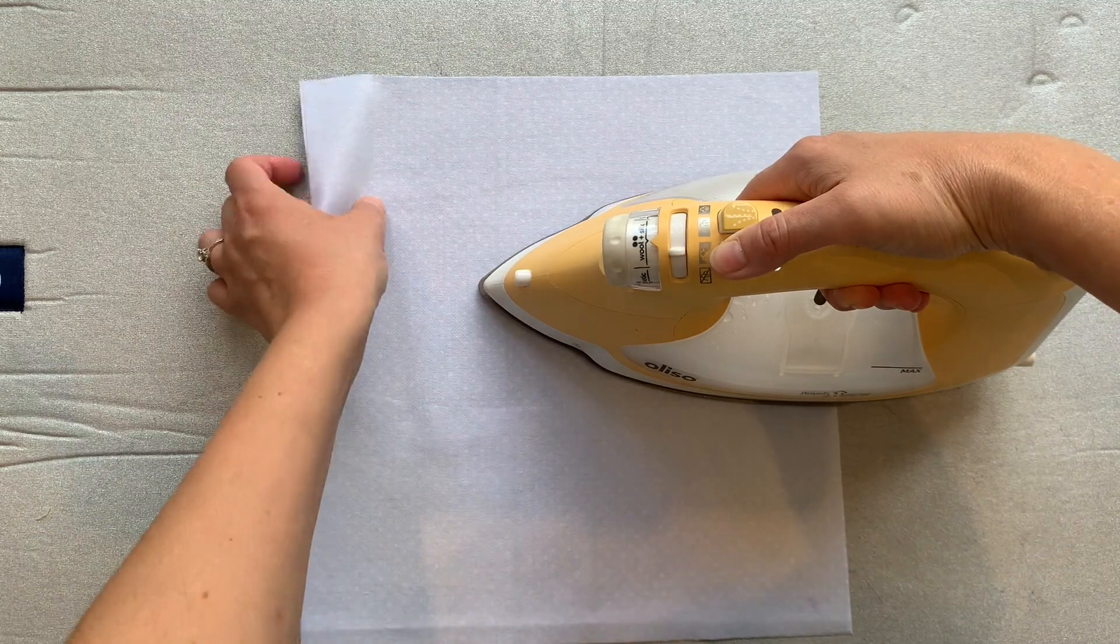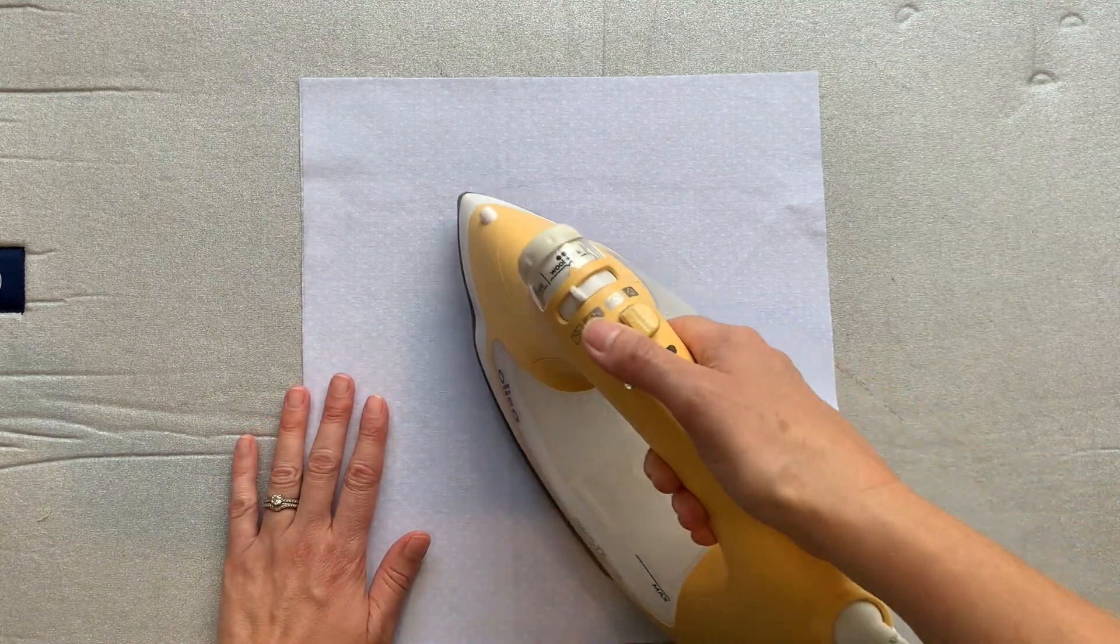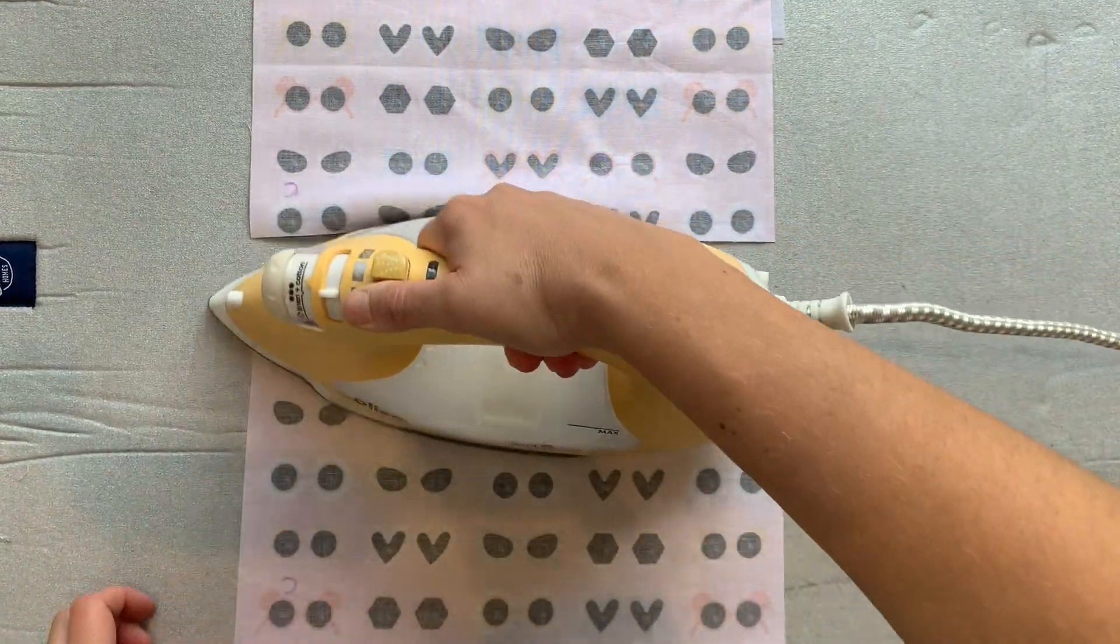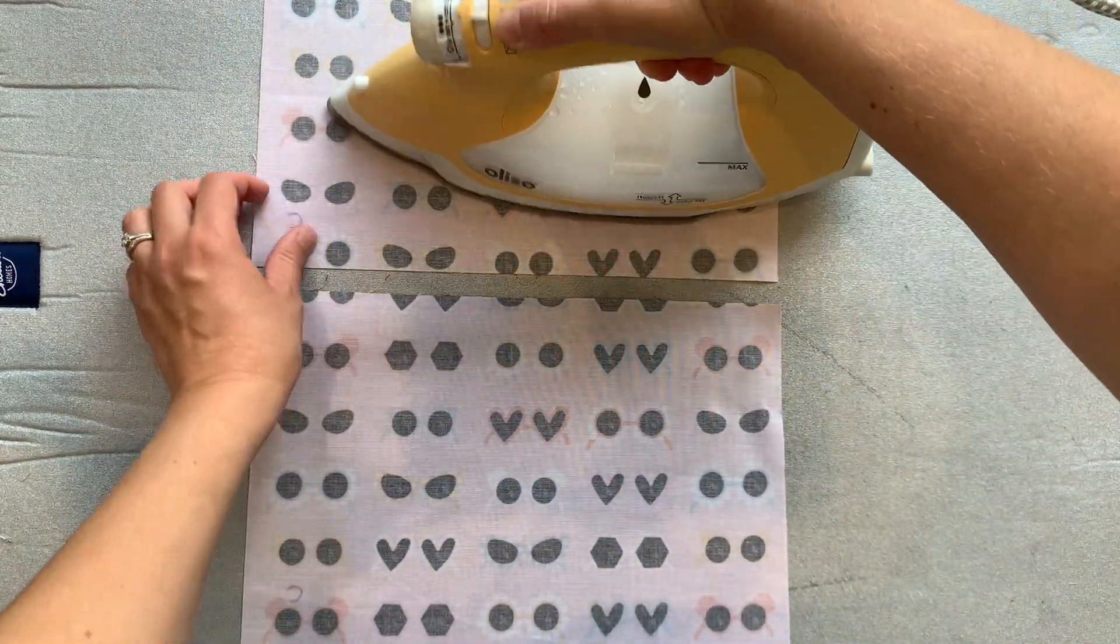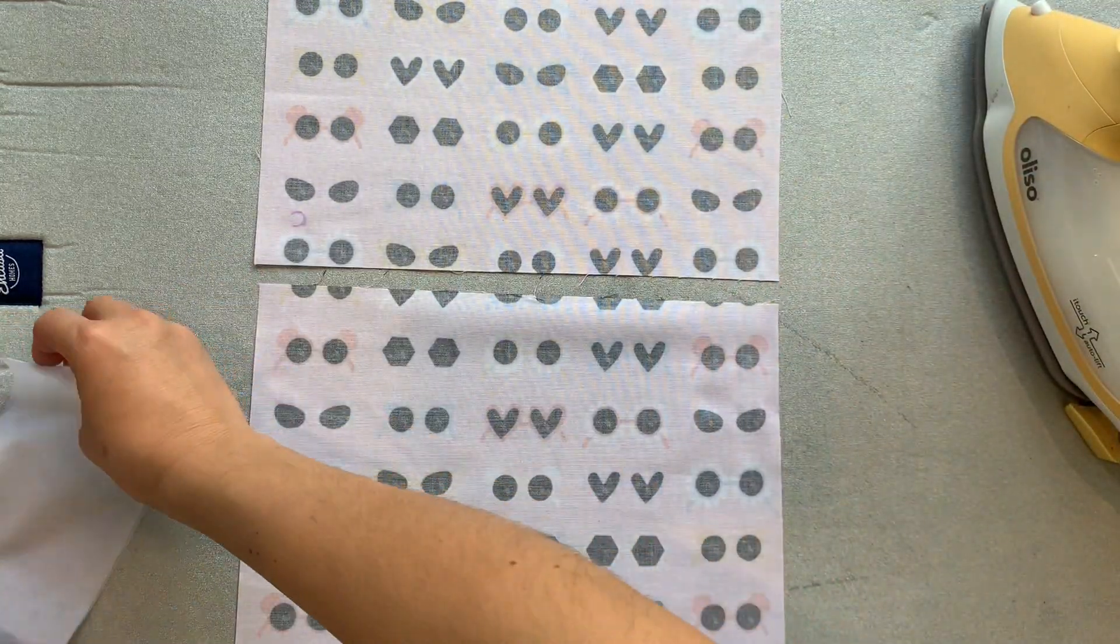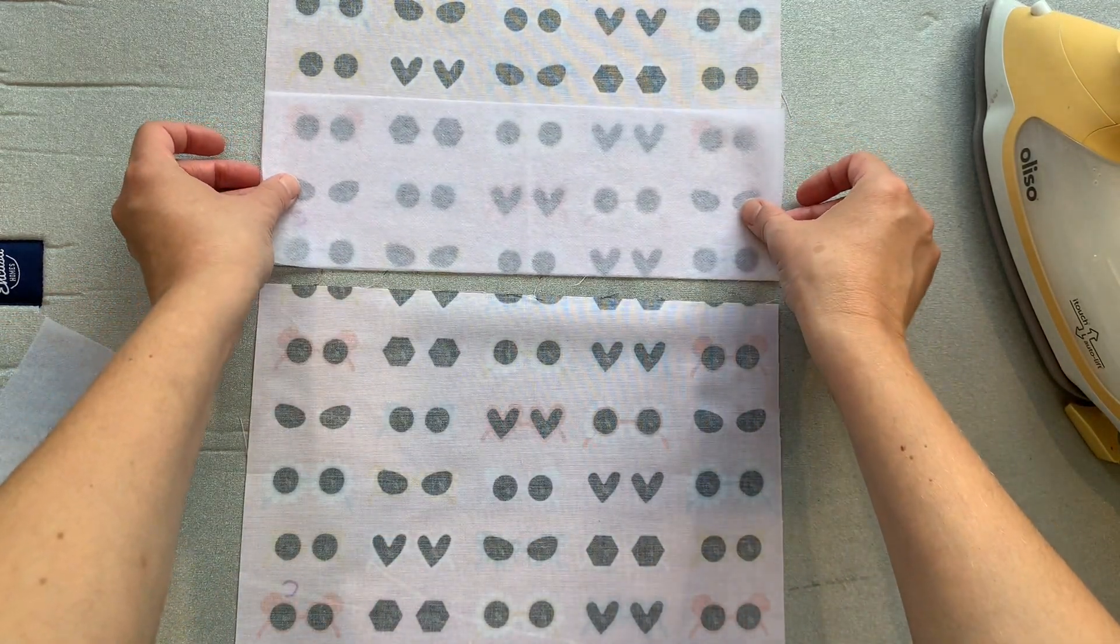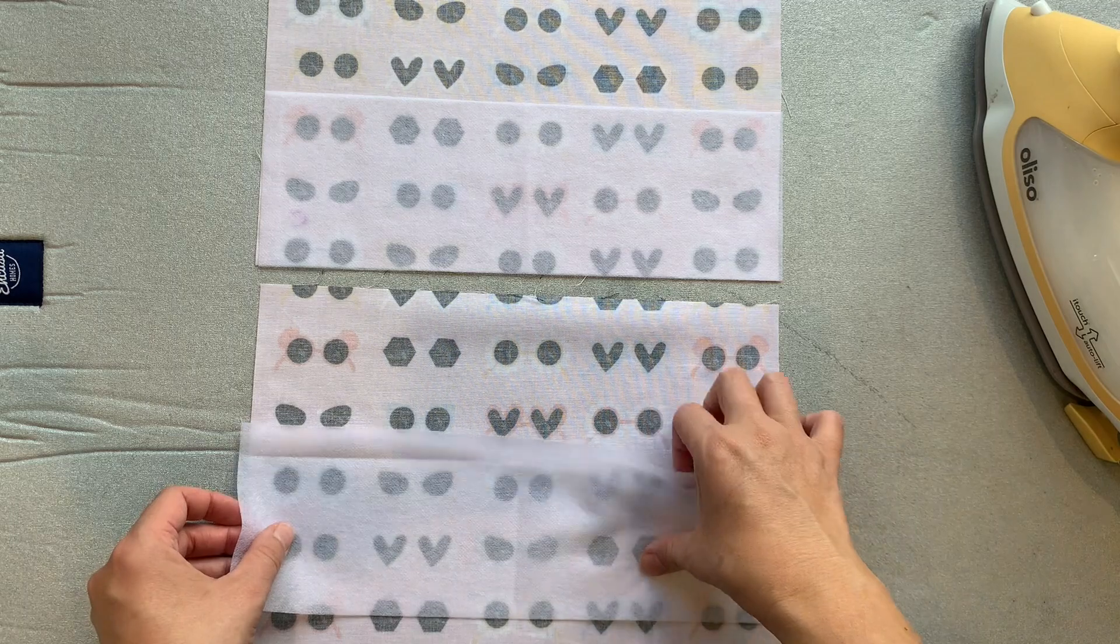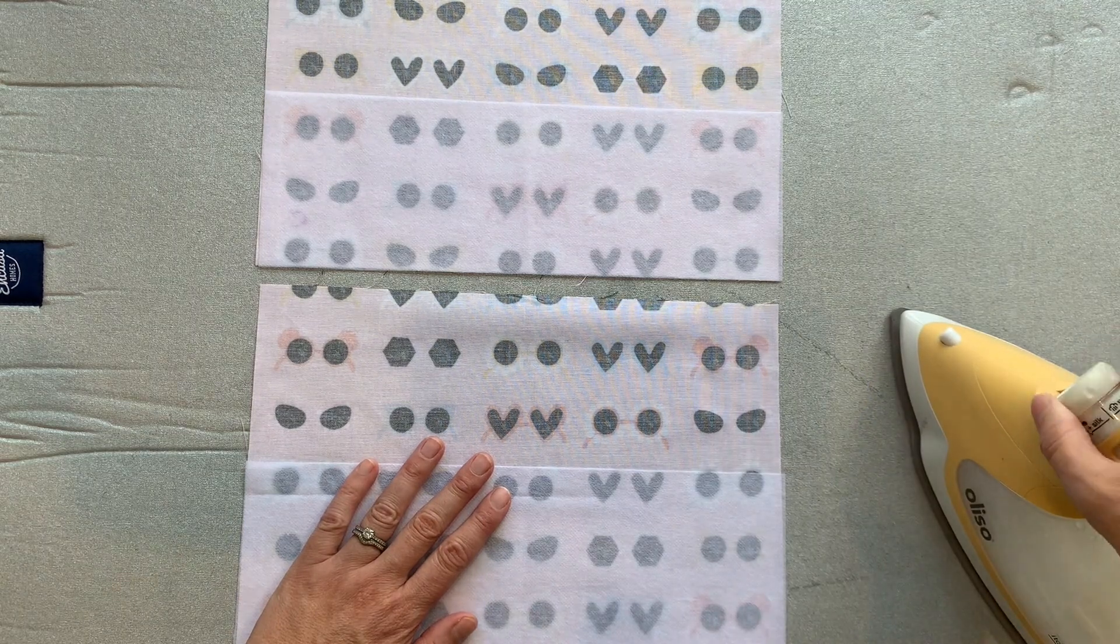So next we're going to apply the interfacing to the wrong side of the main lining panel. So this is piece A again. Next, the passport pockets and the card pockets. So we've got two passport pockets there. And then we want to just interface those to the halfway point with that interfacing. Just make sure there's no little bits of thread there caught up in the middle because that will cause problems.